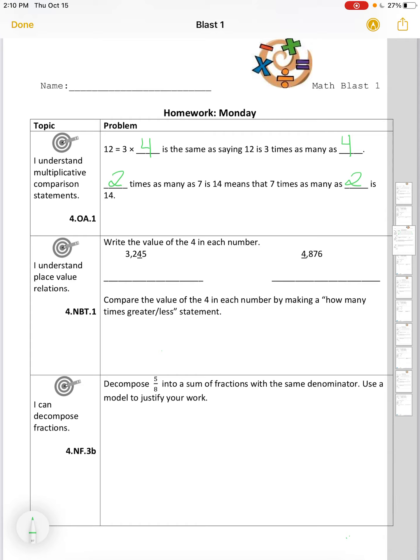I understand place value relations. Write the value of the 4 in each number. 3,245 has a 4 in the tens place. And 4 tens has a value equal to 40.